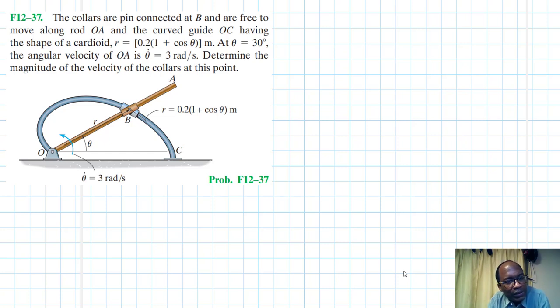Welcome to this screencast. The problem reads: The collars are pin connected at B and are free to move along the rod and the curved guide having the shape of the cardioid R = 0.2(1 + cos θ).